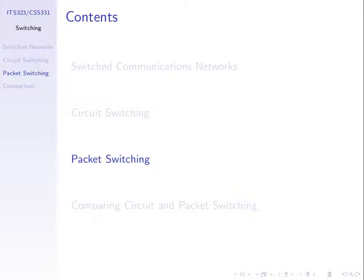At the end of the previous lecture we introduced packet switching. With circuit switching, when we set up a connection we essentially have a long link from source station all the way to destination station, and we can just transmit data at the source and it flows through to the destination. There's no concept of packets necessary. But with packet switching, we break data into smaller chunks called packets and send them one at a time.